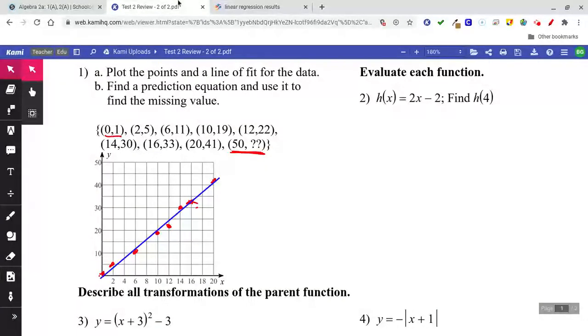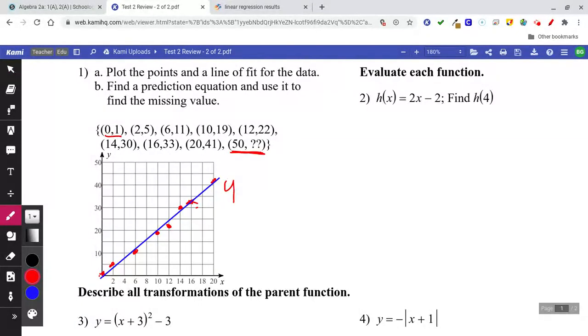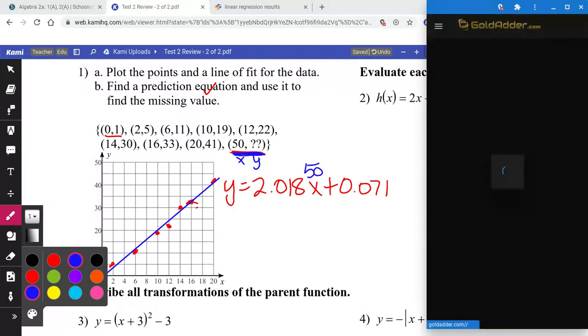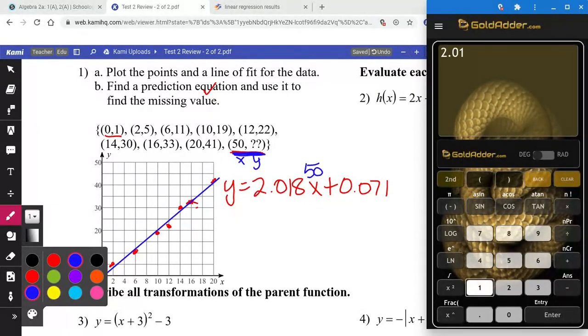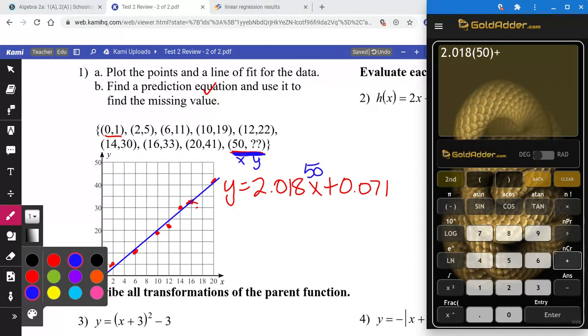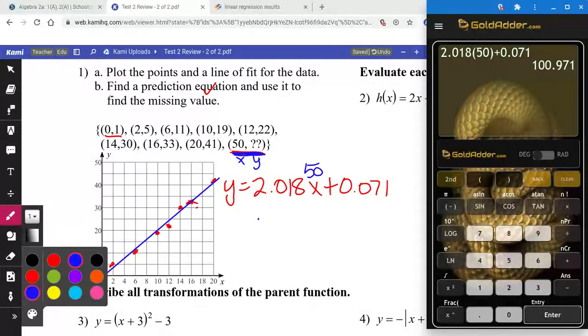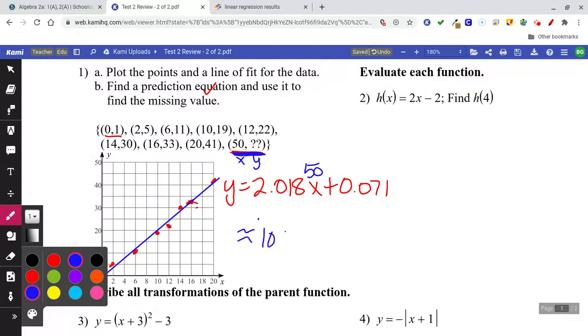So I'm just going to round off to three decimal places. My prediction equation is y equals 2.018x plus 0.071. Now I need to use that equation to find the missing value. And that's where this 50 comes in. We want to plug in 50 for x and see what y equals. So we go back to our calculator, 2.018 times 50 plus 0.071 equals 100.971. So we get 100.971.